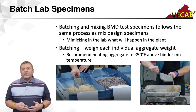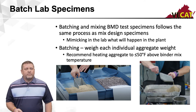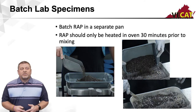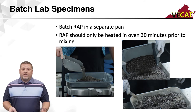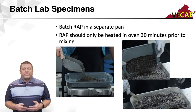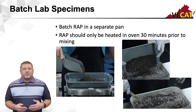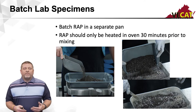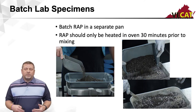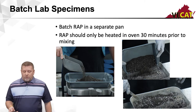What's typically recommended is 50 degrees above your binder mix temperature. When batching your RAP, you want to keep it in a separate pan, because RAP cannot go in overnight — it can only be in your oven 30 minutes prior to mixing. We batched our RAP separately, kept it in a separate pan, and when it came time to add it, we pulled our aggregate out, added the RAP, and stirred it in so that heat transfer begins right away.